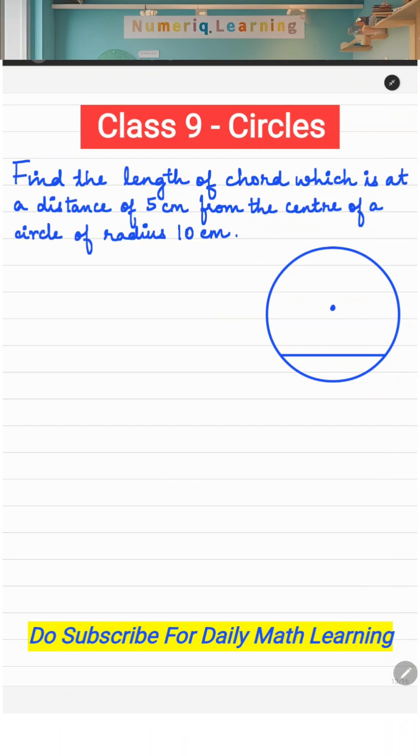Hi everyone, welcome to Numeric Learning. In today's video, let us solve a question from circles. The question is: find the length of the chord which is at a distance of 5 centimeters from the center of the circle of radius 10 centimeters.